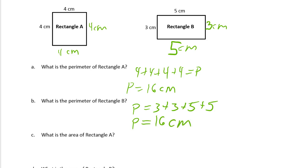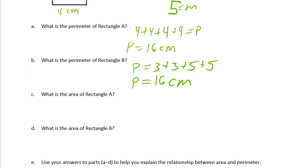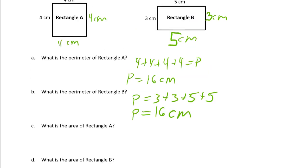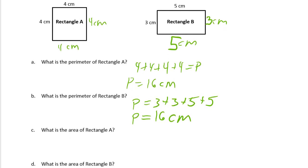What is the area of rectangle A? For area, we multiply the sides. Rectangle A — the areas don't have to be the same for these even though the perimeter is. So the area of rectangle A is 4 times 4, which equals 16. I need to write answer statements for all of these — I'll go back and get them after I finish. And since it's area, they're not centimeters; they're square centimeters.